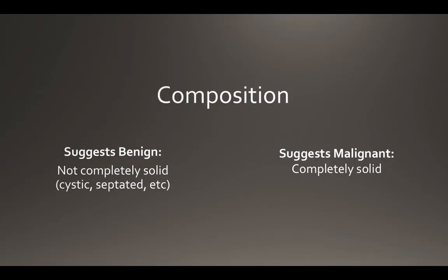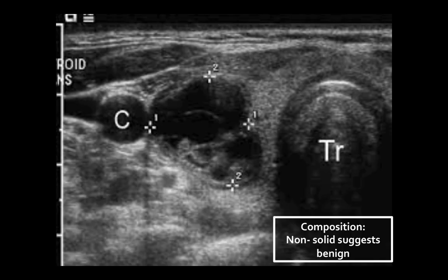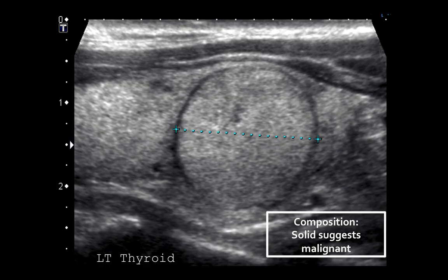Next is composition. What we are really concerned about is whether the nodule is completely solid, often a characteristic of malignant nodules, or if it is not. Here we see a nodule on the right lobe of the thyroid with a cystic appearance with numerous septations — often referred to as a honeycomb pattern — and this suggests a benign lesion. This nodule, however, is very clearly solid. There's a small point of hypoechogenicity in the center which may be the vessels feeding the nodule, and this pattern is concerning for malignancy.